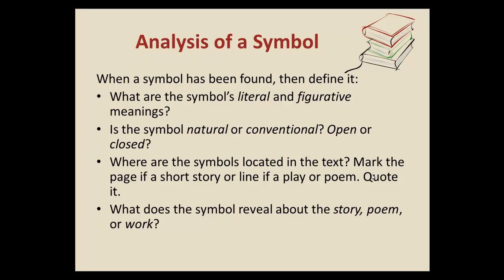You can quote it, paraphrase it, or just describe the part where it's located in the text. Tracing that symbol throughout and naming the spots where it's offered can help you write how that symbol either changes or transitions as it's used throughout the story, and how it changes in accordance with the character it belongs with. What does the symbol reveal about the story, poem, or work? That is one of the final things that adds into the analysis factor of writing about or defining a symbol. What deeper meaning does that symbol provide overall to the work is what you would want to discuss.